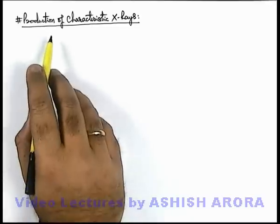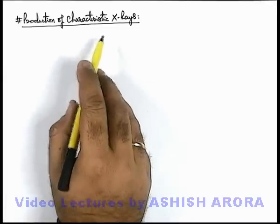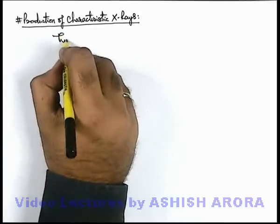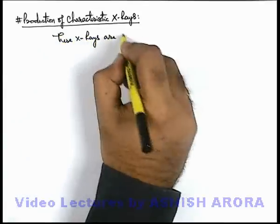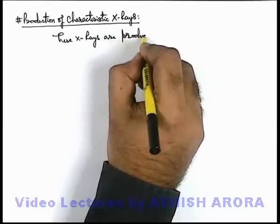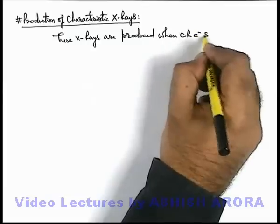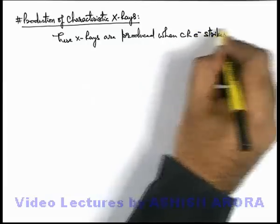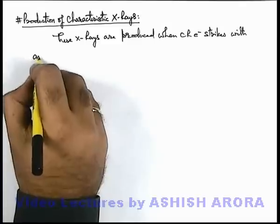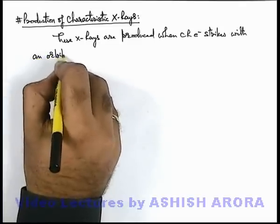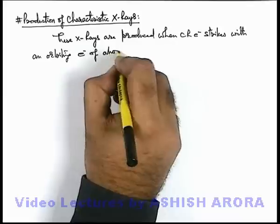Let's discuss the production of characteristic x-rays. As we have already briefed in the previous section, these characteristic x-rays are produced when a cathode ray electron strikes an orbiting electron of the anode atom.